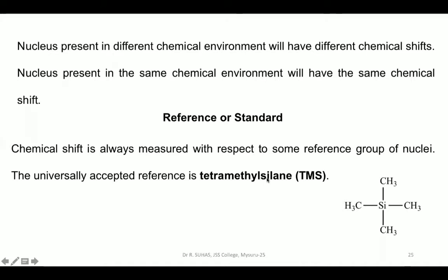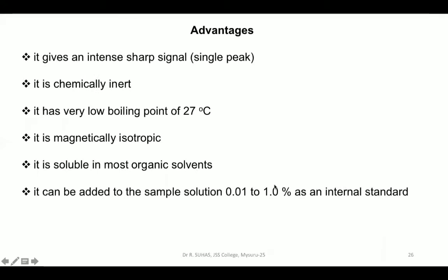The chemical shift is always measured in terms of some reference group. The structure of tetramethylsilane has four methyl groups attached to a silyl group — hence tetramethylsilane. When we call this the universal standard, it should have some advantages, which we will now see.